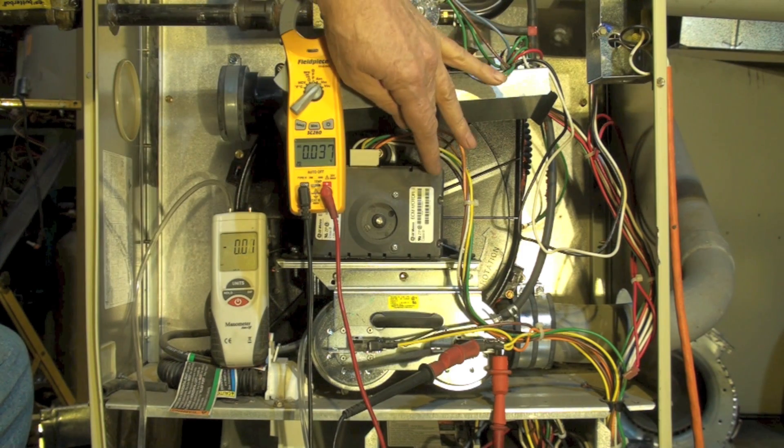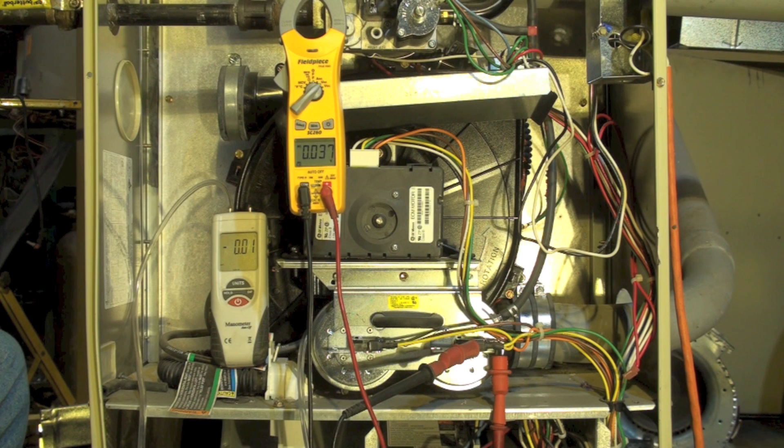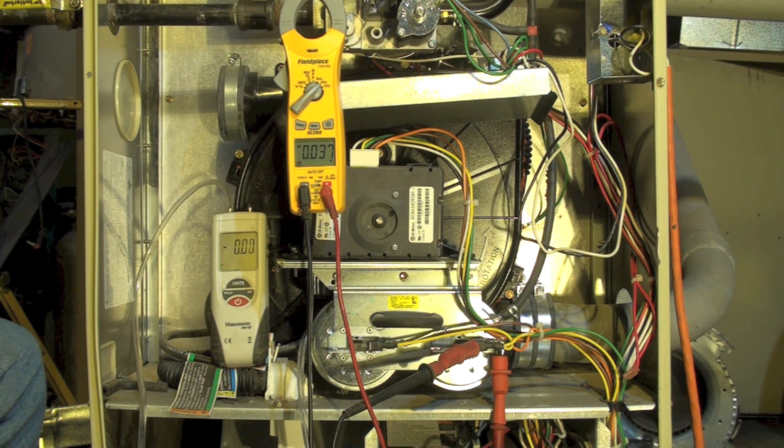What this variable speed inducer does is match its own speed with the venting. There's a certain amount of resistance in the venting and it's variable depending on how long and how many elbows are in it. It adjusts its speed to get a certain amount of vacuum.